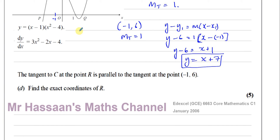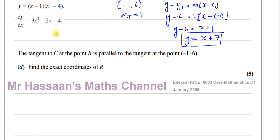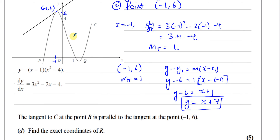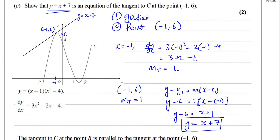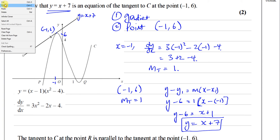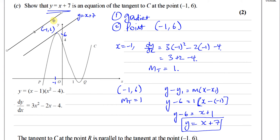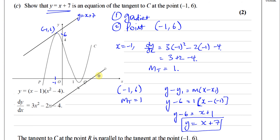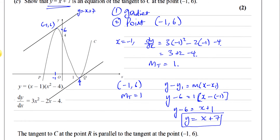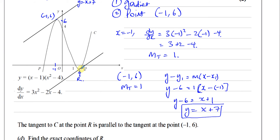Part D — the question the student asked about. It says the tangent to C at point R is parallel to the tangent at (-1, 6). Find the exact coordinates of R. So there's another point on the curve where the gradient is the same as at (-1, 6). Looking at the curve, that point R is going to be somewhere further down. We have to find it by calculation, not just visually. Since they're parallel, the gradient at R must also equal 1.